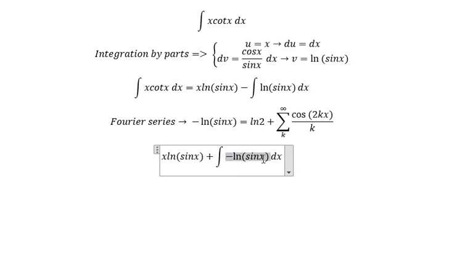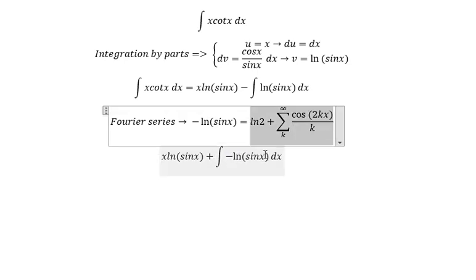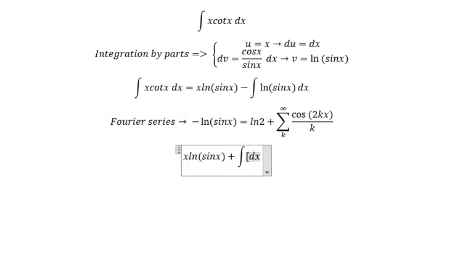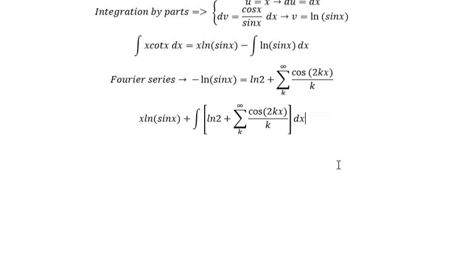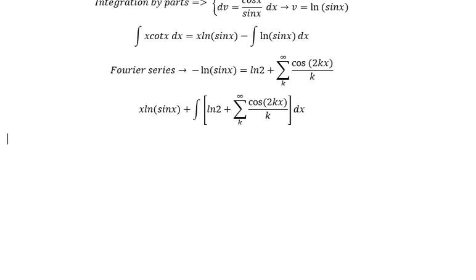We change for this one negative ln of sine s. Now we have negative the integral of ln of number 2, we get s ln 2, and we take the integral of both sides.